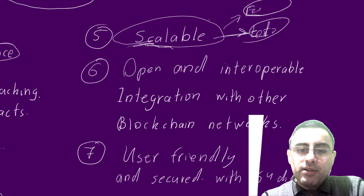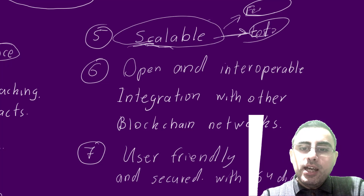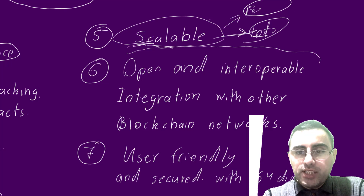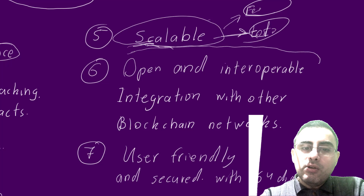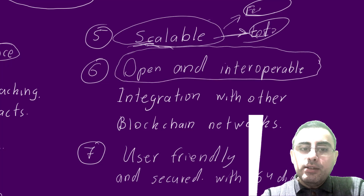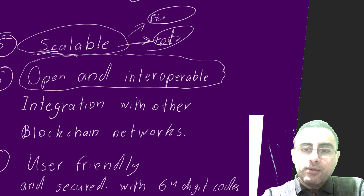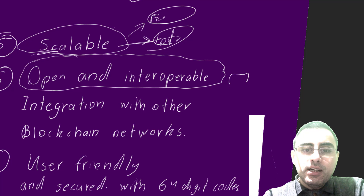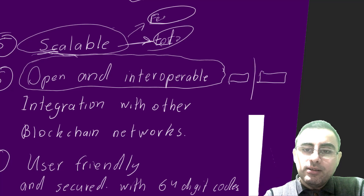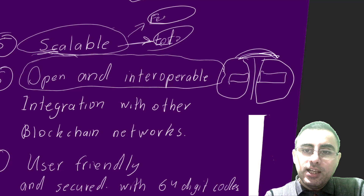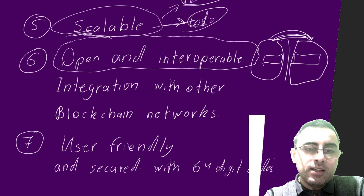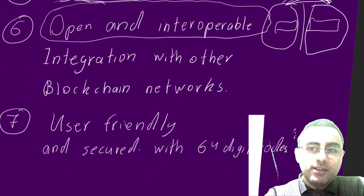It's also open and interoperable — meaning you can integrate with other blockchains and networks. It can have contact between different blockchain networks. Even if you have your own smart contracts and assets, you can still collaborate with other owners. Even if you are separated, you can still operate together.